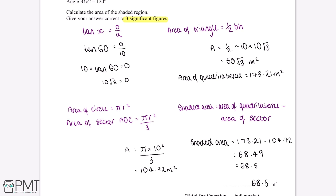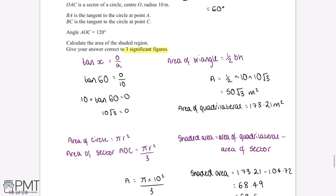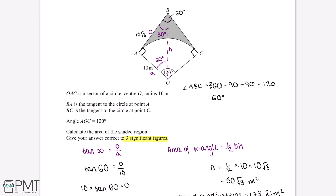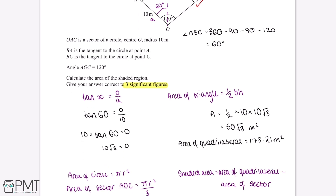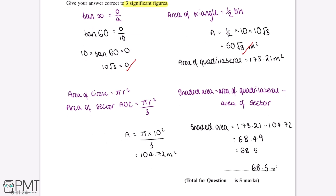This question is worth five marks. The first mark is for showing angle BAO or BCO is 90 degrees. The second mark is for finding the length of AB. The third mark is for the area of one triangle. The fourth mark is for the area of the sector. The fifth mark is for the correct final answer.